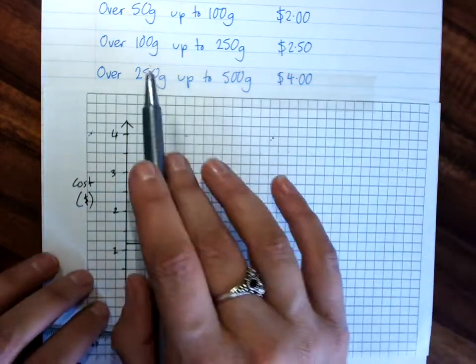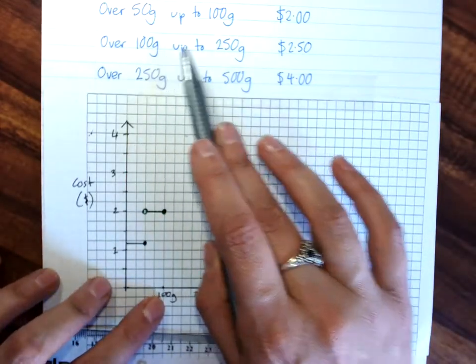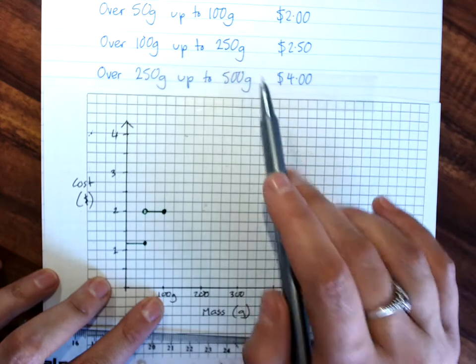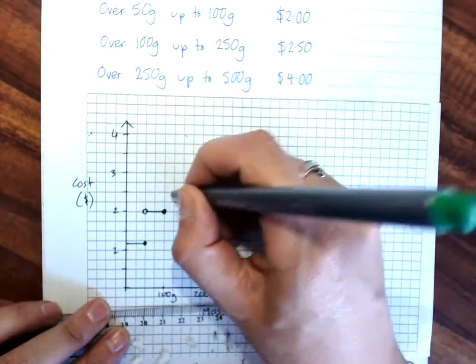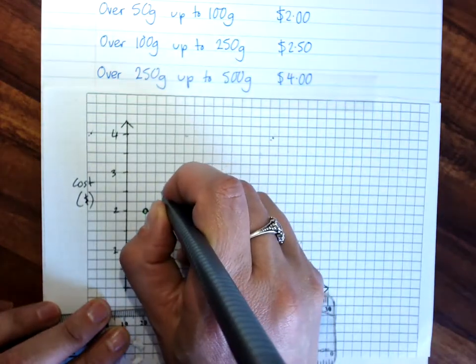So, the next one, over 100 grams, up to 250 grams. So, my line, and that will be $2.50, that's nice and easy, that's there.